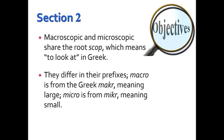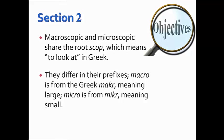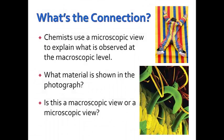Macroscopic and microscopic share the word 'scop' as the root word, meaning 'to look at' in Greek. They differ in their prefixes: macro is from the Greek meaning large, and micro meaning small. Chemists actually use the microscopic view to help explain what gets observed at the macroscopic level.